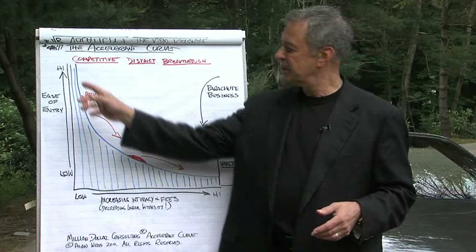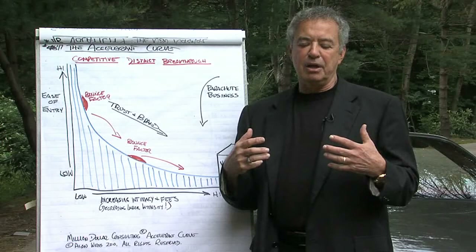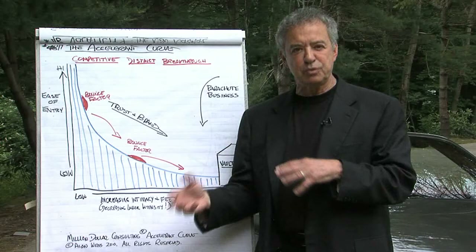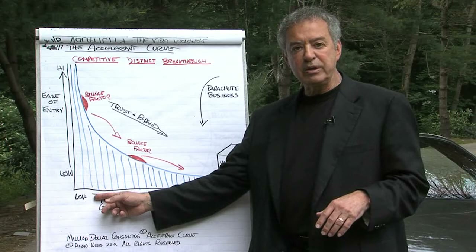The Accelerant Curve has two axes — the vertical and the horizontal. On the vertical, I have ease of entry. The higher you are on the vertical, the easier it is to do business with you. That means I can find something free to download that you provide, or you might sell a booklet for $5, $7, or $12. You might have a teleconference for $30. There's an ease of doing business with you, of getting to know what your value is and who you are.